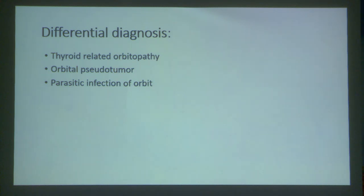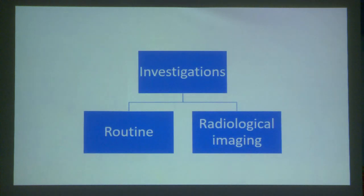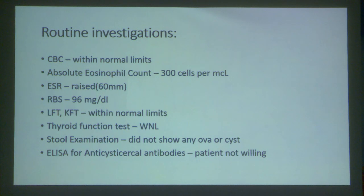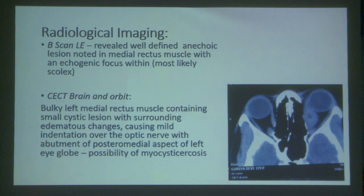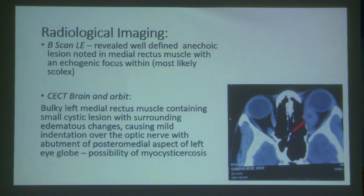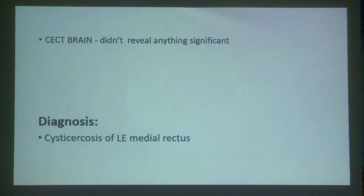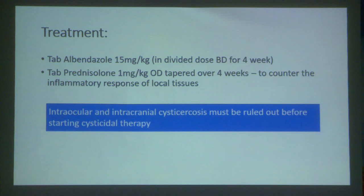Differential diagnosis included thyroid-related orbitopathy, orbital pseudotumor, and parasitic infection of orbit. Routine investigations showed CBC within normal limits, absolute eosinophil count 300 cells per microliter, ESR raised, RBS 96 mg/dL, LFT, KFT and thyroid function tests within normal limits. Stool examination showed no ova or cyst; ELISA for anti-cysticercal antibody — patient not willing. B-scan of left eye revealed a well-defined anechoic lesion in the medial rectus muscle with an echogenic focus within, most likely a scolex.